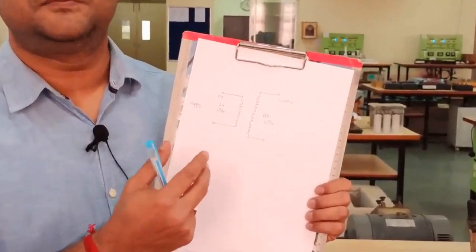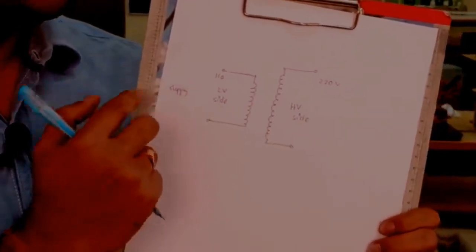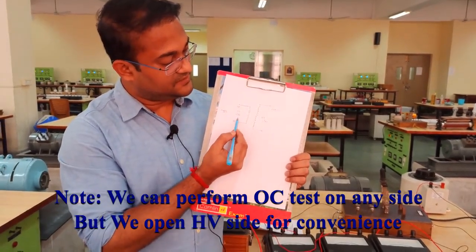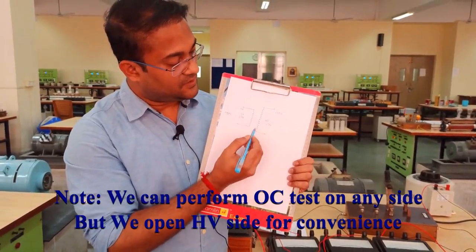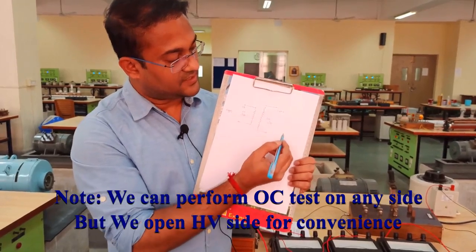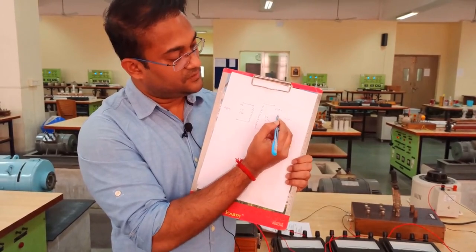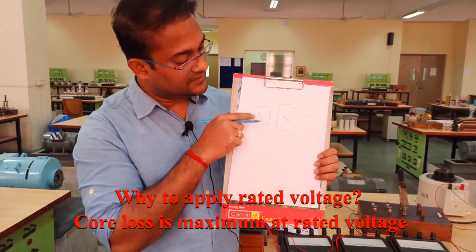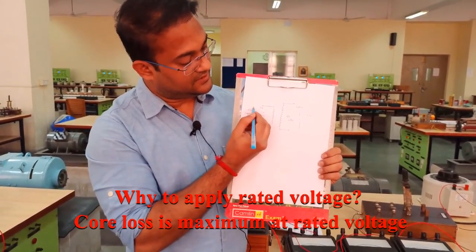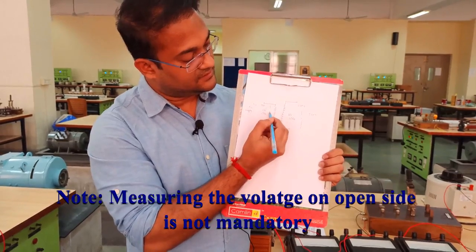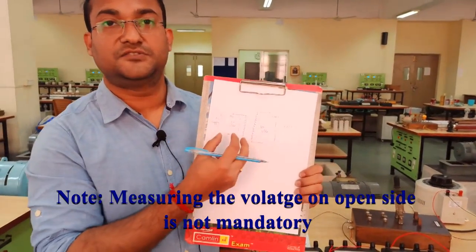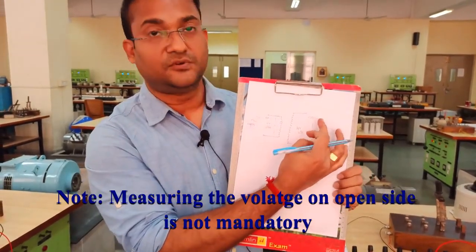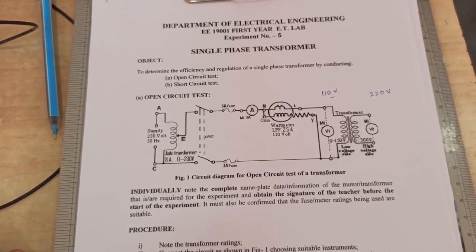To perform the open circuit test, we have to open circuit one side and connect the power supply to the other. There are two sides: the HV side and the LV side. If we perform the test on the high voltage side, we need a power supply and voltmeter rated for 220 volt. But if we perform the open circuit test on the LV side, we only need a 110 volt power supply and 110 volt voltmeter. So the instrument ratings are lower if we connect the power supply on the low voltage side and keep the high voltage side open.